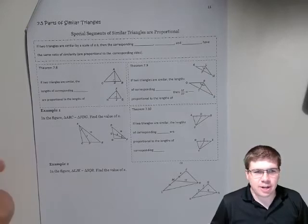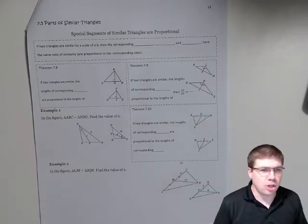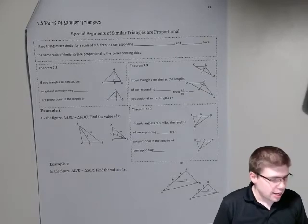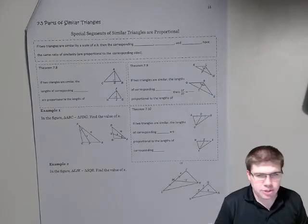Hey Geometry! So today we're going to get into section 7.5 parts of similar triangles. These are special segments of similar triangles that are proportional.